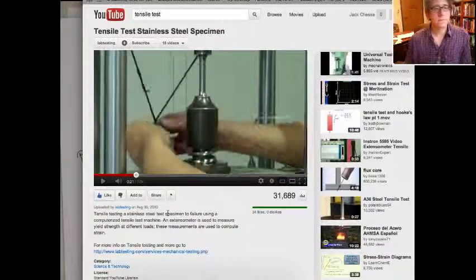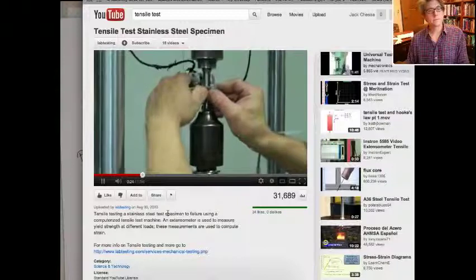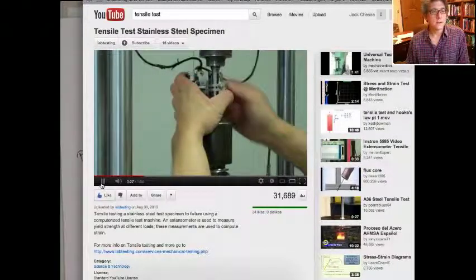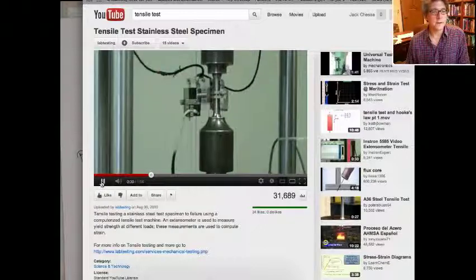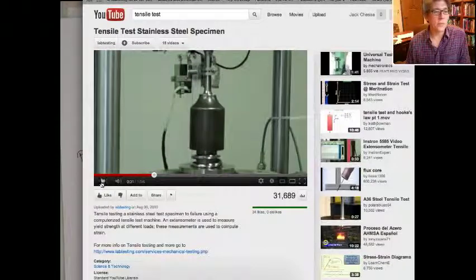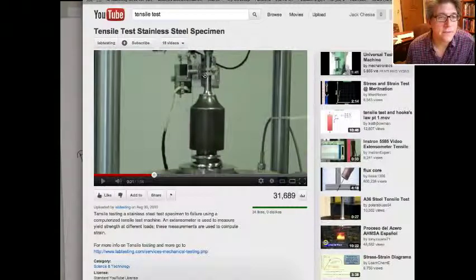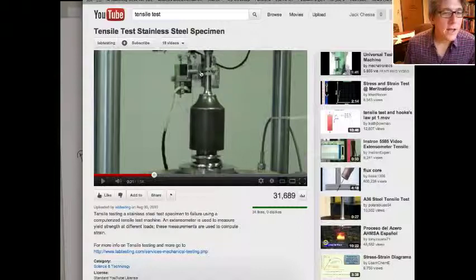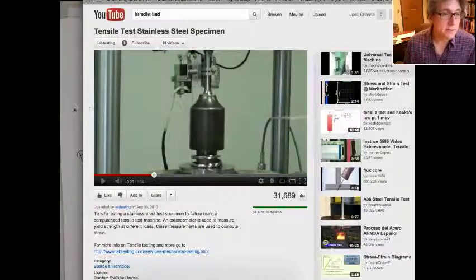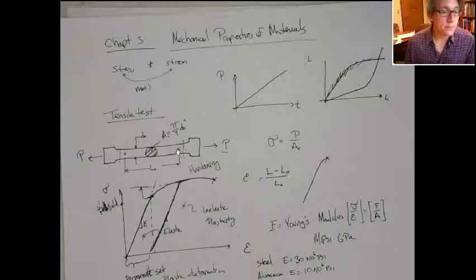Engage tensile specimen between cross ends. Apply an extensometer. Now, this device here is what's called the extensometer. It's a very well-calibrated instrument. It basically has two points that lock onto the tensile test specimen, kind of like at these two points, like a little pinhole that goes in there.